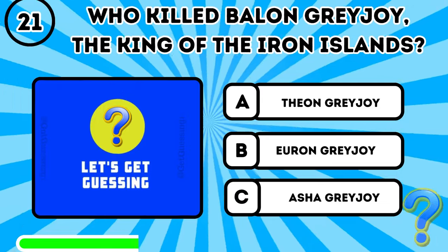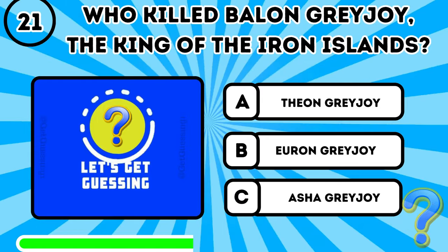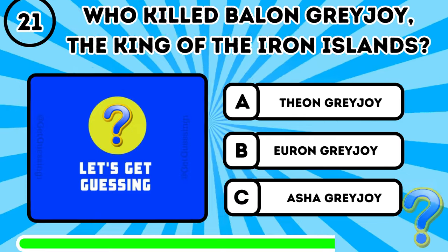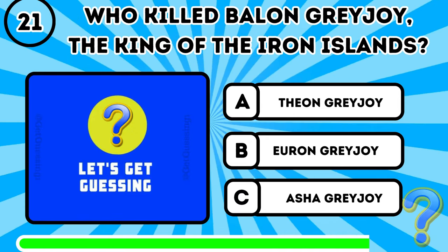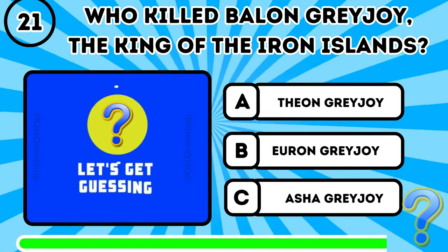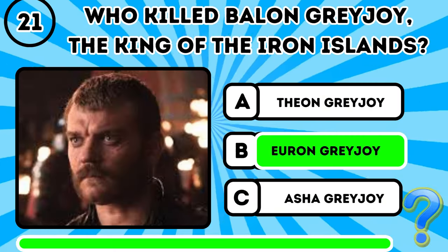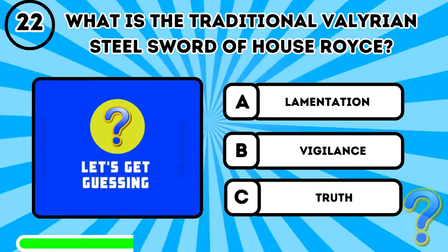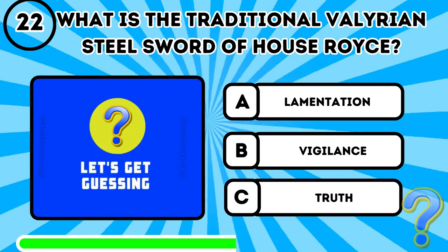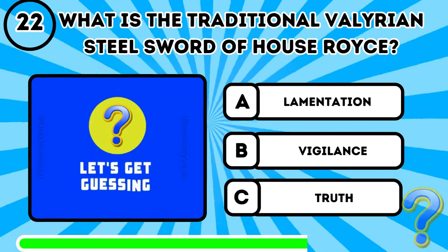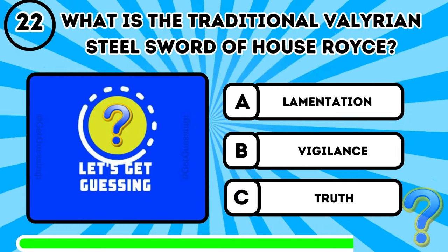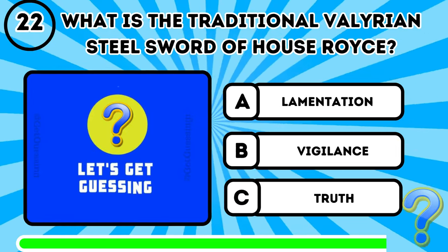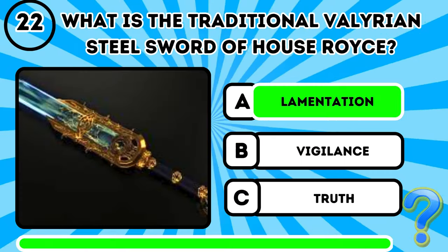Question 21: Who killed Balon Greyjoy, the King of the Iron Islands? It's B, Euron Greyjoy. Question 22: What is the traditional Valyrian name? It's A, Lamentation.